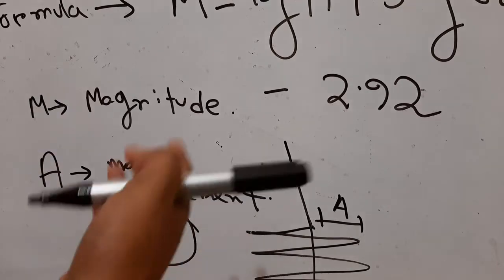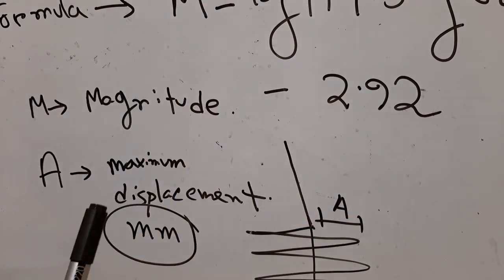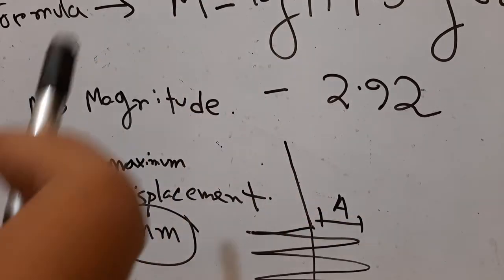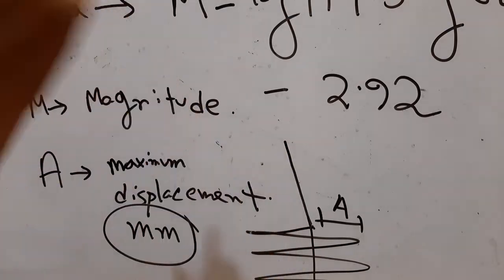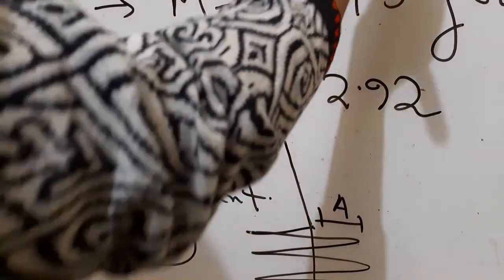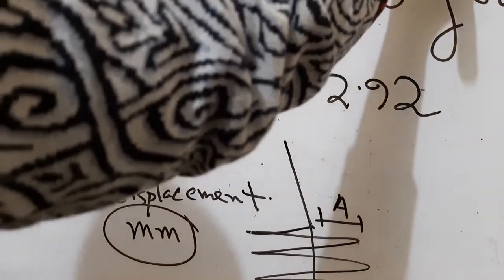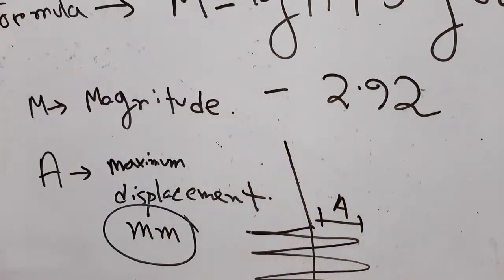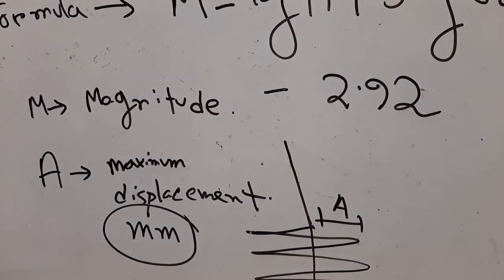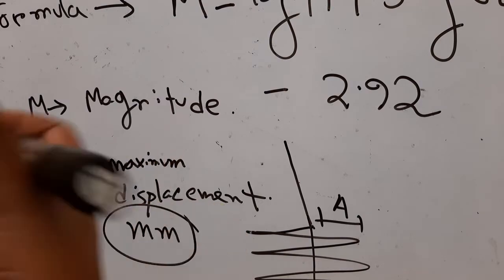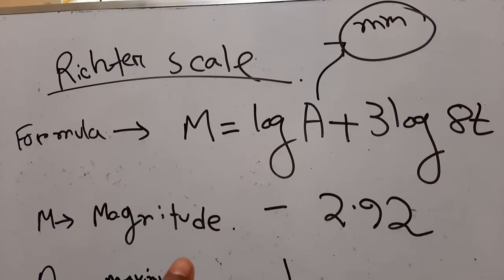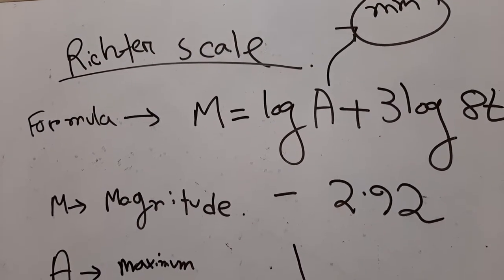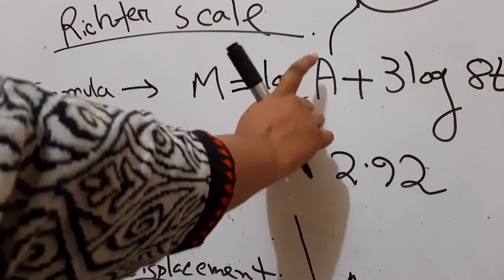If displacement is given in inches, you must convert it to millimeters. If given in meters or centimeters, convert to millimeters. Always use millimeter units for A. For example, one inch equals 25.4 millimeters.